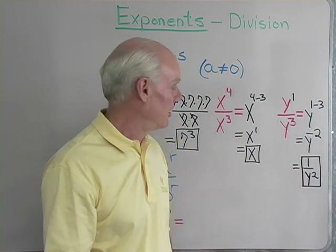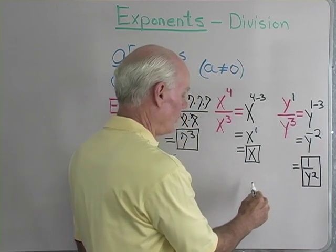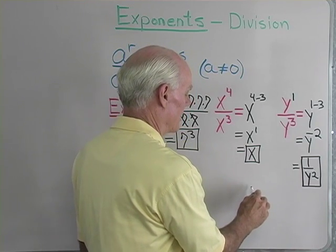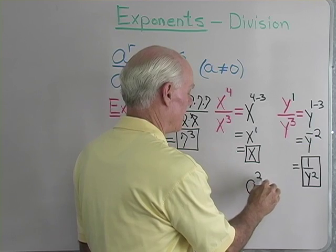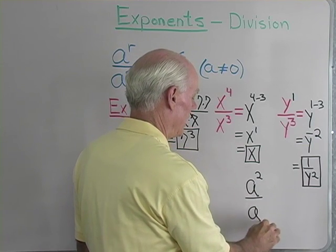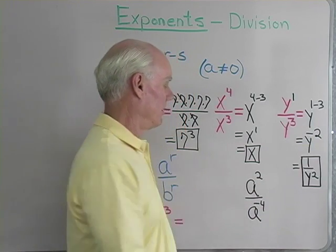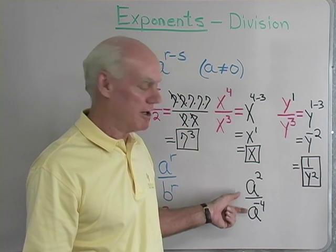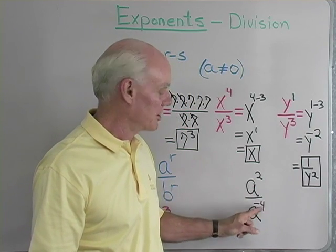Okay, let's try one more problem here, and that's going to be, let's say, a to the 2nd power divided by a to the negative 4th power. So I have the same base right here. It's division, and one of my exponents is negative.